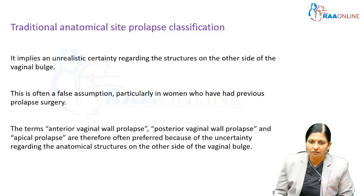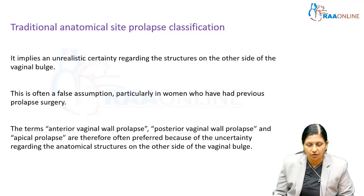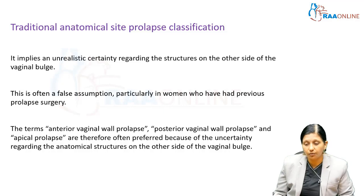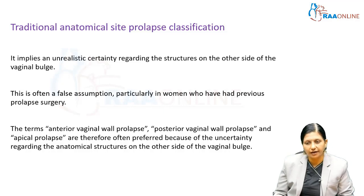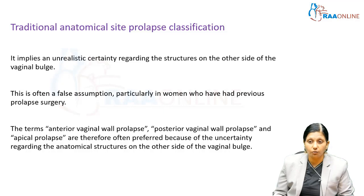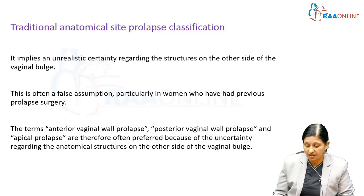Anterior vaginal wall prolapse is a better terminology than saying cystocele or urethrocele. Posterior vaginal wall prolapse is a better terminology than saying enterocele or rectocele, because we are not very sure what that bulge is on the posterior vagina.